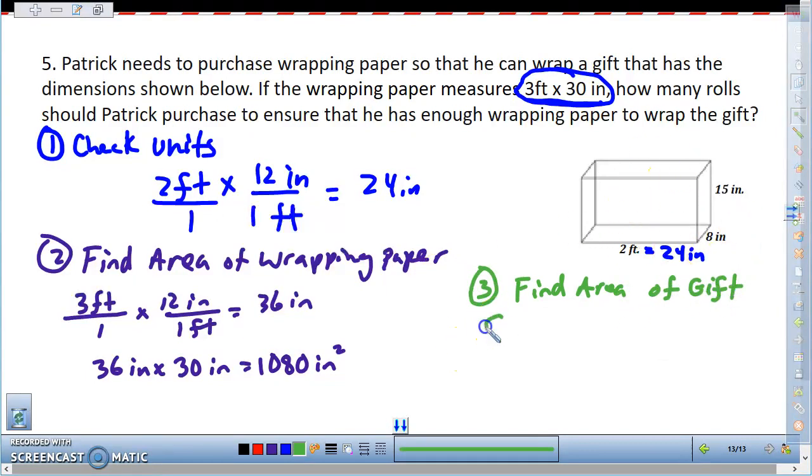So I know the surface area formula is S equals pH plus 2 times the base. So I need to find the perimeter of my base, and I'm going to just treat the bottom face and the top as my bases.